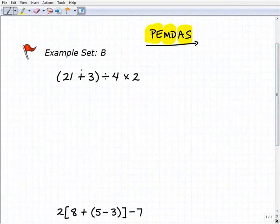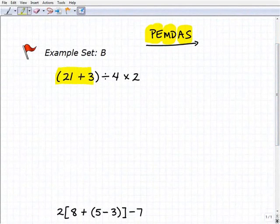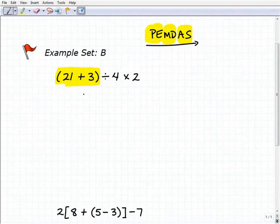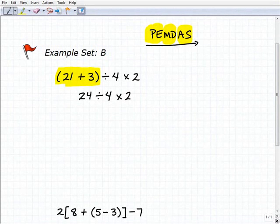And so I look at my first problem, I'm looking for parentheses or grouping symbols. And of course, I have them right here. So I have to do what's inside of the parentheses first. So I have 21 plus 3. Of course, that's going to be 24 divided by 4 times 2.